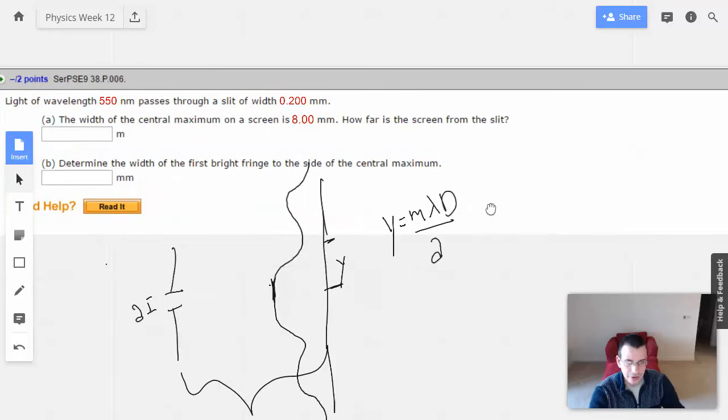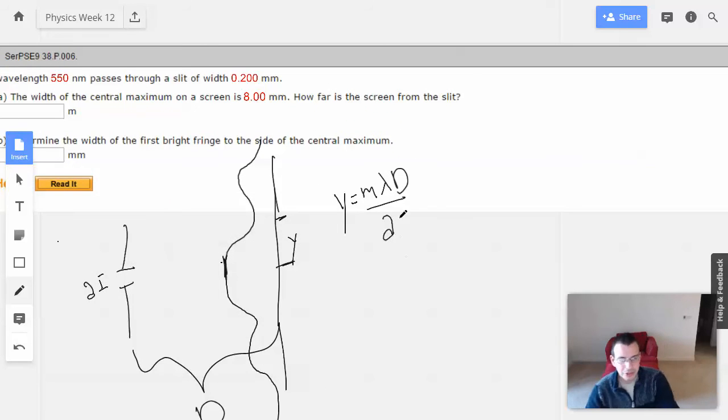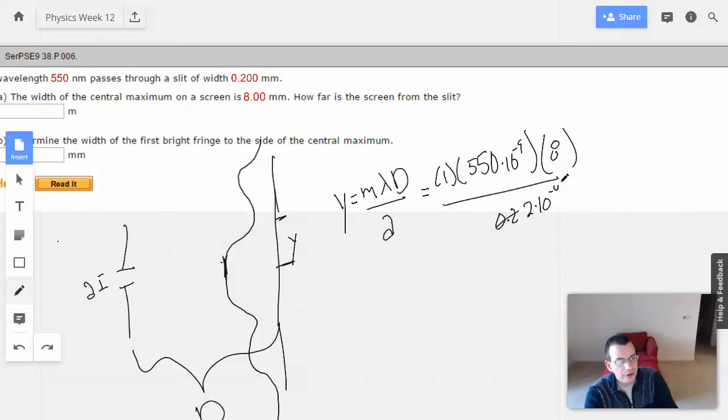Alright, so this should be pretty straightforward. So I have 1 times wavelength, which is 550 times 10 to the negative 9th, times distance, which is 8, divided by aperture, which is 0.2, and I'll say 2 times 10 to the negative 4th.